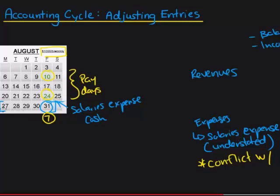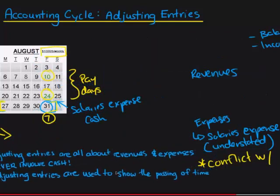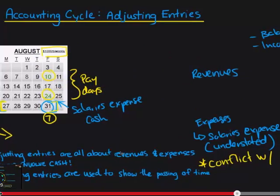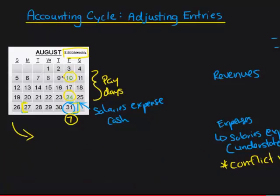To do that, we're going to perform an adjusting entry in this last week. The adjusting entry we'll perform is going to be an expense adjusting entry, because this is not a revenue adjusting entry — we're not earning money, we're paying employees. And if you remember from the rules, adjusting entries are all about revenues and expenses, and this is not going to involve cash. So right away, you know we're not using the account of cash.